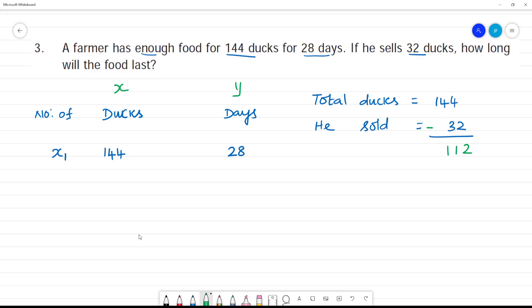So now he has how many ducks? Now this is x2. Now you're left with 32 ducks sold - you're left with 112 ducks.